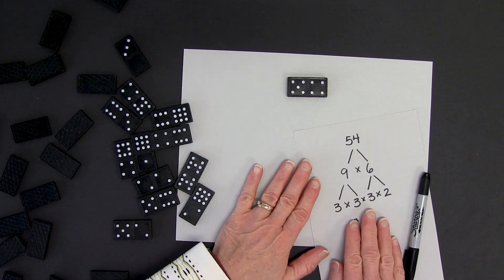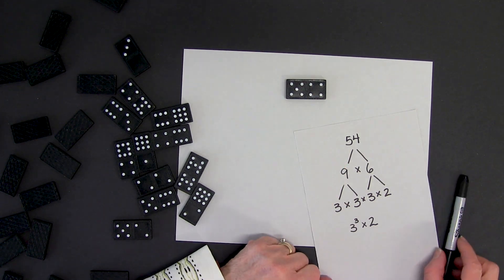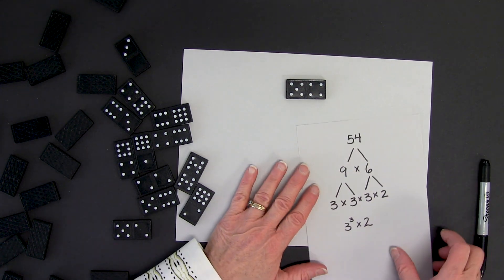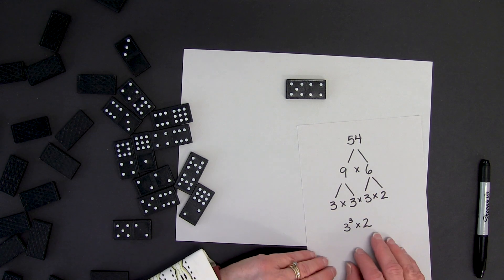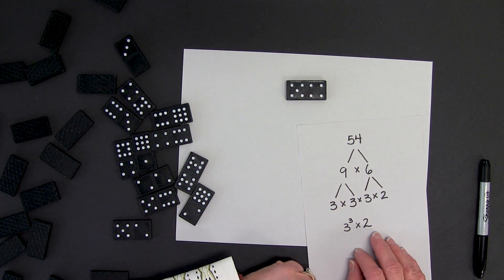And here's one of the ways in which I can use dominoes to help me express prime factorization of a composite number.